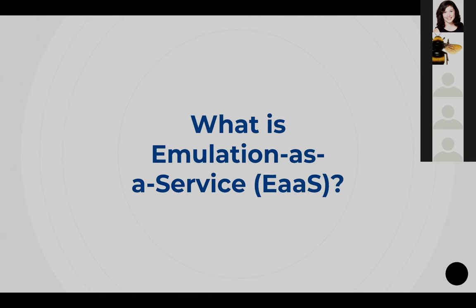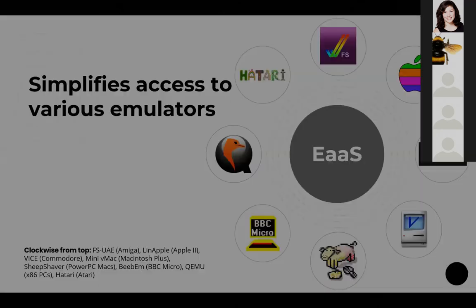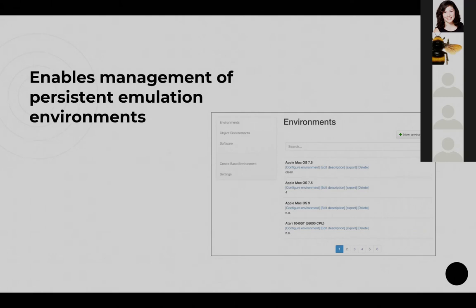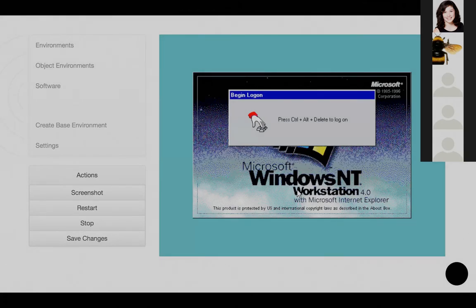What do I mean by EAAS? Emulation as a Service is a server stack that can combine and consolidate the capabilities of a number of open source hardware emulators. It enables users to create, interact with, and return to persistent computing environments. Those environments can be whatever combination of software and hardware those emulators allow — Apple, Atari, Windows — whatever the emulators can do, we can do. The real advantage is that you can do all of this from the convenience of a web browser, which greatly reduces redundant setup on different machines and is ideal for delivering emulated environments to end users.